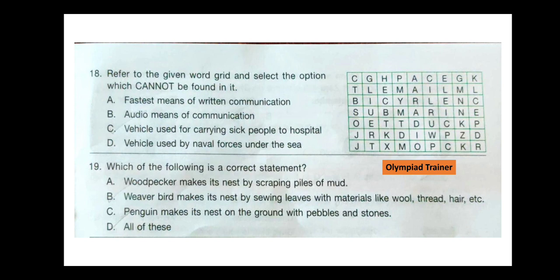Question 19. Which of the following is a correct statement? A: Woodpecker makes its nest by scraping piles of mud. B: Weaver bird makes its nest by sewing leaves with materials like wool, thread, hair, etc. C: Penguin makes its nest on the ground with pebbles and stones. D: All of these. The correct answer is option C.